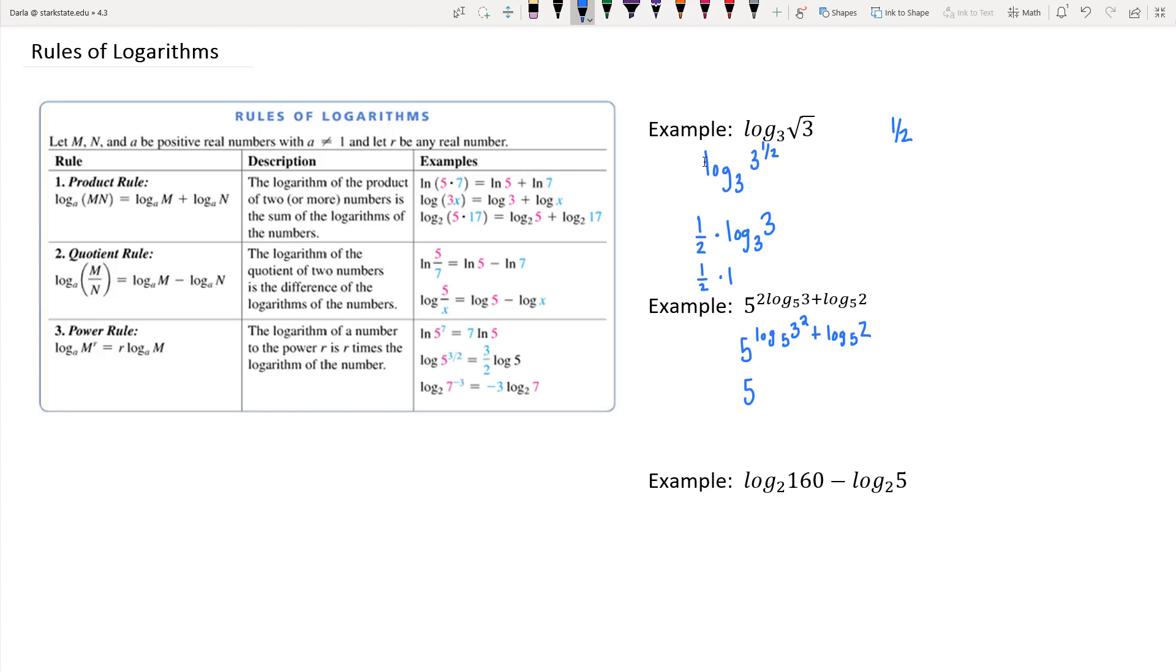But then notice that the sum of the logarithms are of the same base, so that means we can combine them into one log. If we keep our log base five, that didn't change. But instead of splitting that apart, we put it together as a product using our product rule. So three squared is nine, and then we're multiplying that by two.